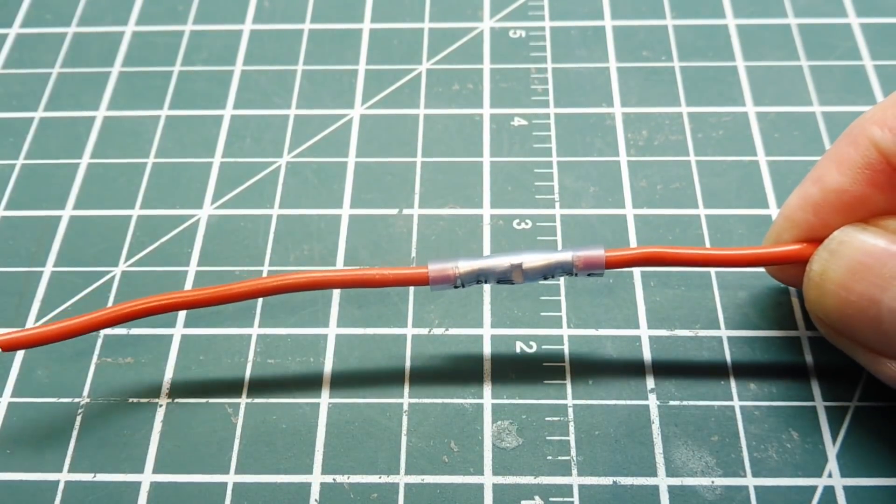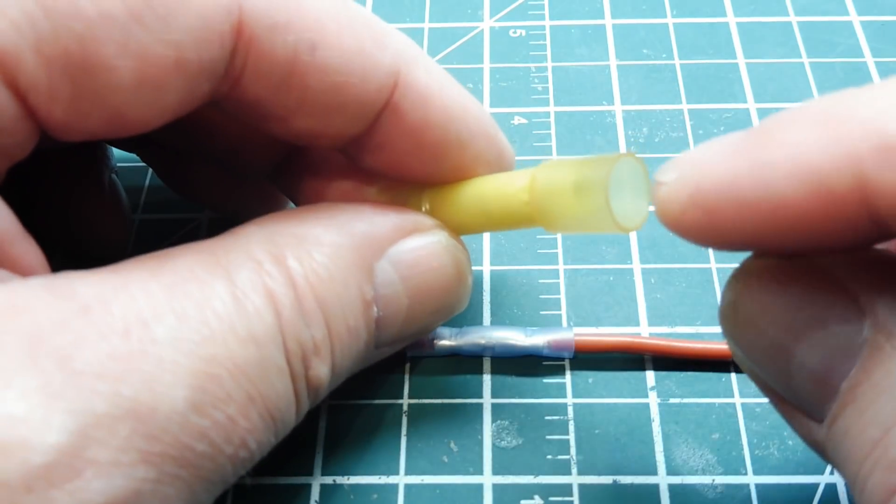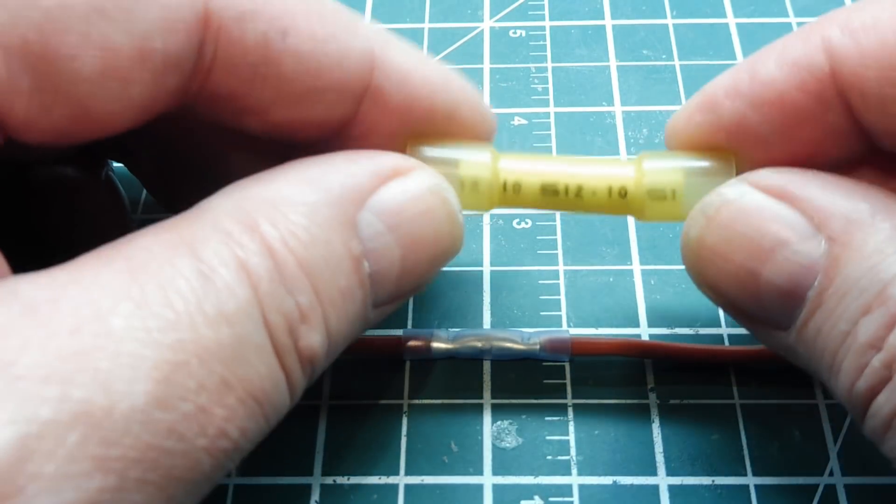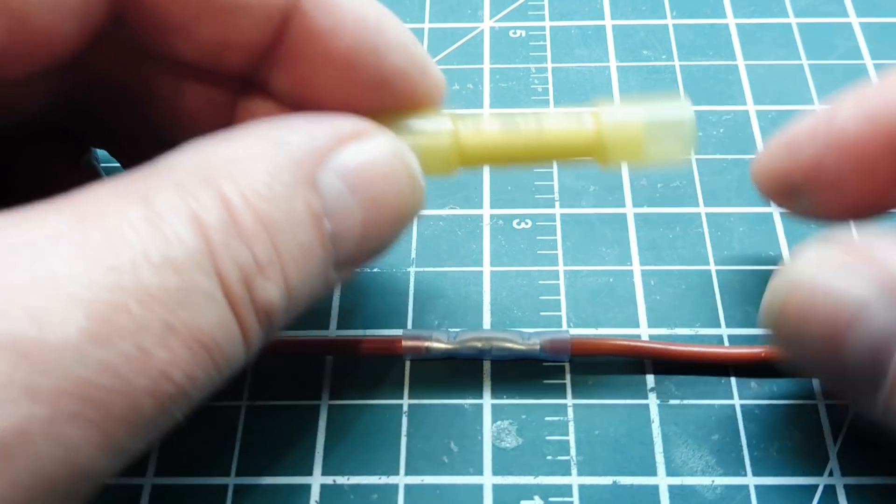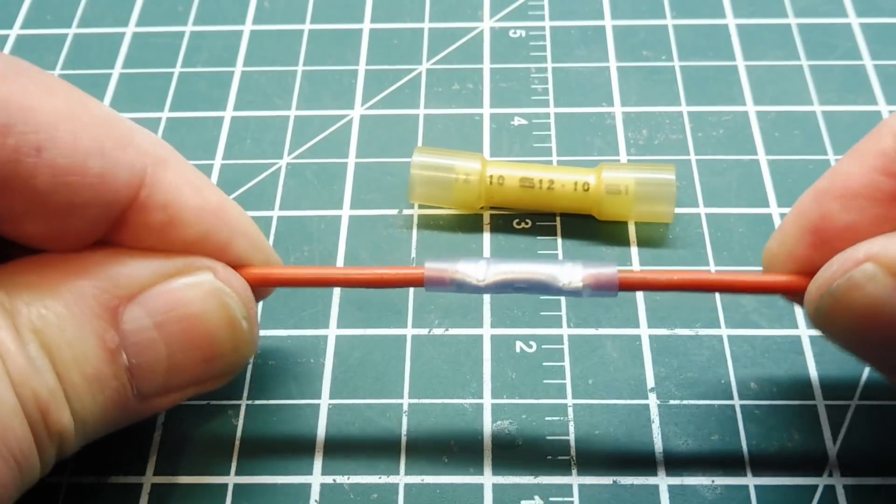We can get these butt connectors with built-in heat shrink, like this one here, and some even have a sealant inside there which is activated by the heat, so after it's heat shrunk, it's actually waterproof. There's our common butt splice, very easy to do, and very strong.